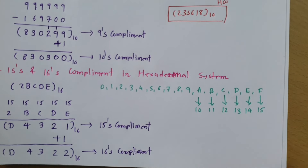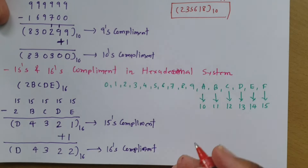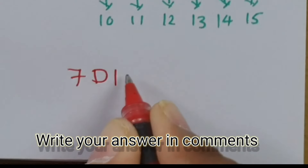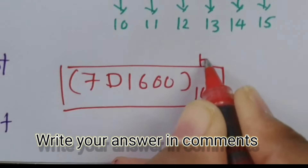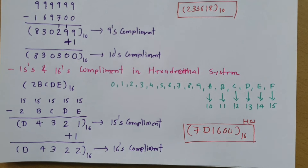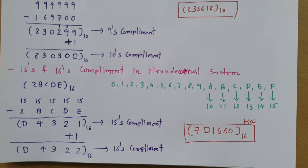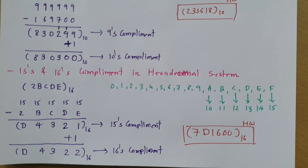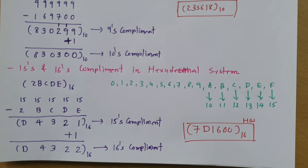I'll give you one self-study problem — write your answer in comments and I will get back to you if any mistake is there. A hexadecimal number is given; find its 15's and 16's complement. Thank you so much for watching this video. Please give your valuable suggestions — based on your suggestions I will make videos to solve your queries, and that helps other students as well.